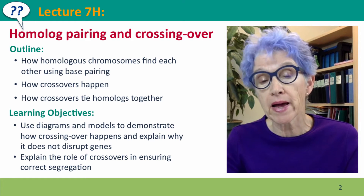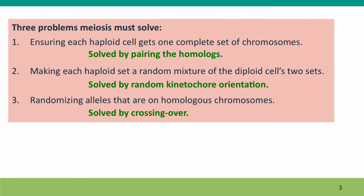All of this is mediated by base pairing. We've answered two of our three questions about how meiosis solves its problems. It's able to ensure that each haploid cell gets a complete set of chromosomes by first pairing the homologs and then using the same 'separate the partners' strategy that mitosis uses. The sets that result are a random mixture of chromosomes because when the homologs are paired, the kinetochores are oriented randomly and you can't predict which chromosome is going to get pulled to which pole.